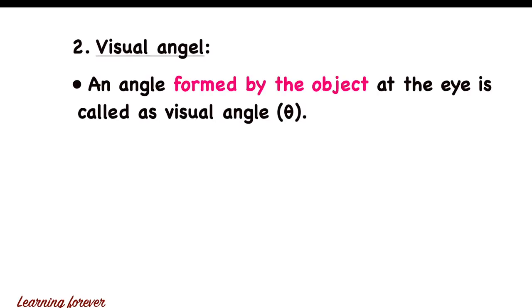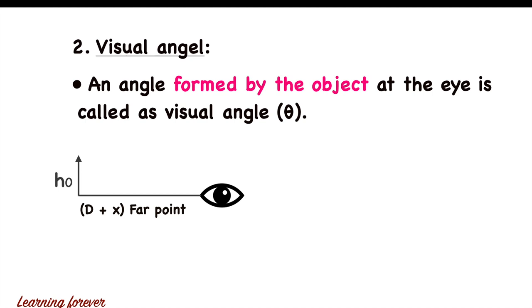The second term is visual angle. The angle formed by the object at the eye is called the visual angle, denoted by the symbol theta. Suppose there is an object of size h0 kept at the far point, which is at a distance of d plus x. When the object is kept at the far point, the visual angle will be small and as a result, a small image of the object is seen by the eye.